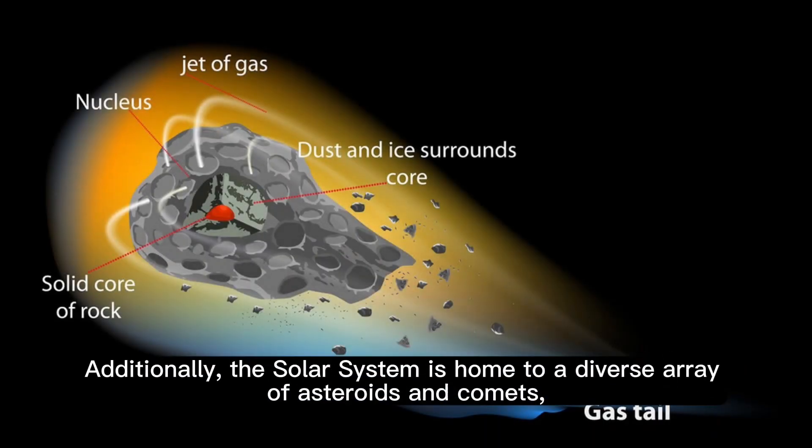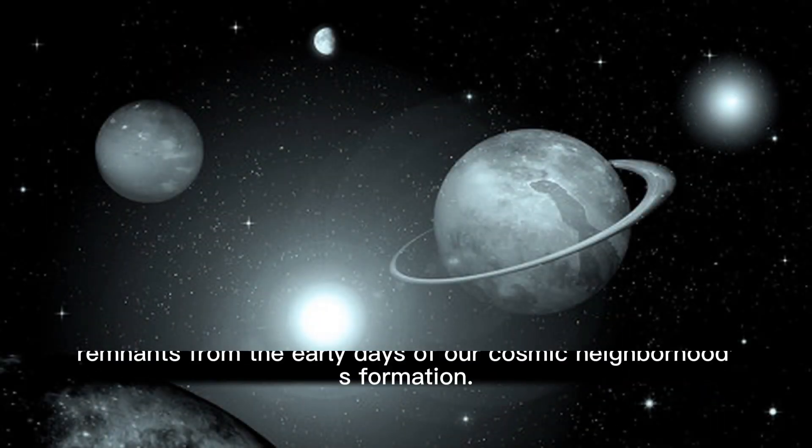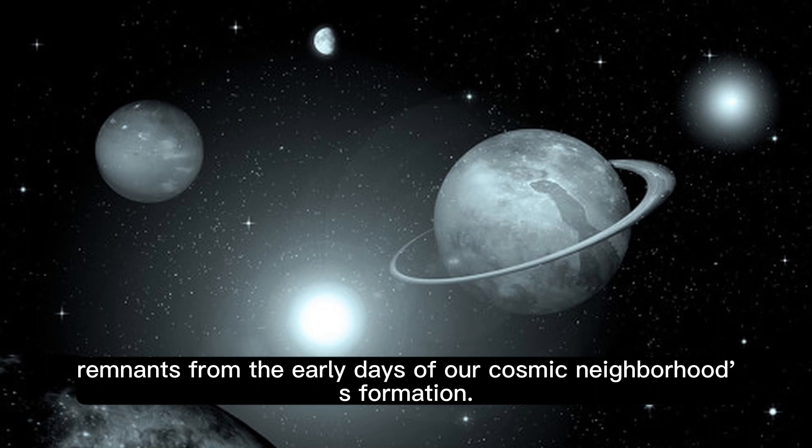Additionally, the solar system is home to a diverse array of asteroids and comets, remnants from the early days of our cosmic neighborhood's formation.